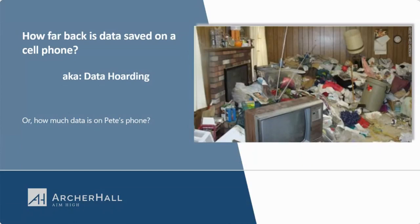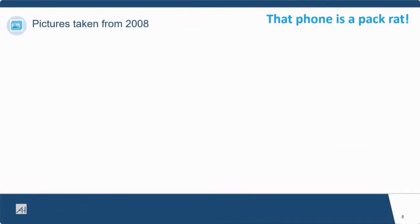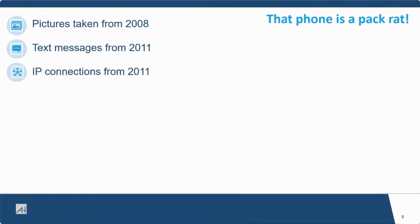In generalities, we can pull nearly everything off a cell phone, but there are exceptions. WhatsApp may update and we can no longer access it. If you set text messages to auto-delete after 90 days, they're generally gone. Older software generally yields more data. With my own phone — I switched from a BlackBerry to an iPhone in 2008 — I have pictures going back to 2008, text messages from 2011, IP connections from 2011, and cookies from 2011.